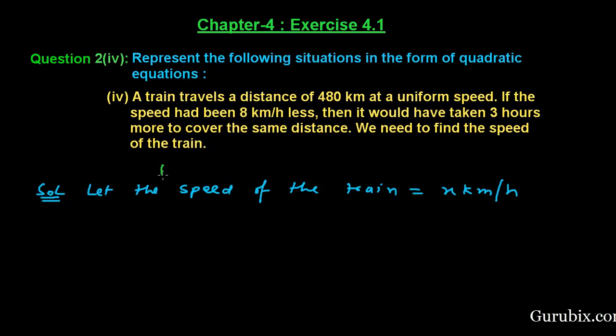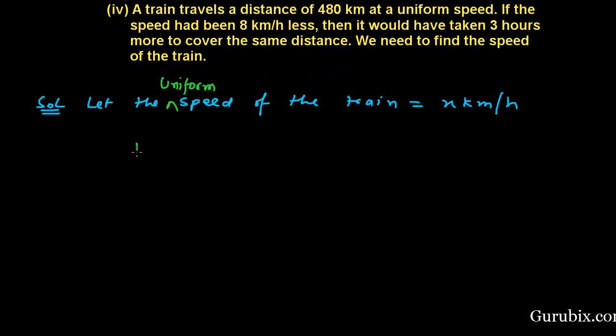Let the uniform speed of the train be equal to x km per hour. And the distance is 480 km to cover in both the conditions.